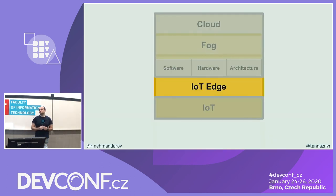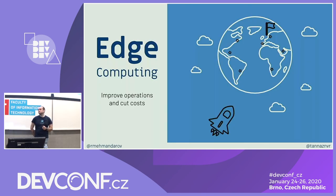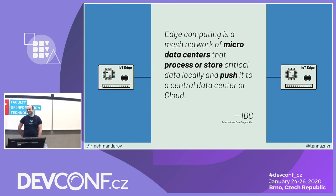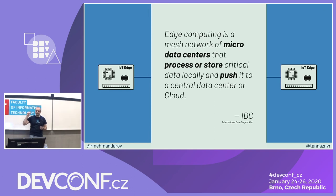The next thing in our stack is IoT Edge. Edge computing improves operations and cuts costs. As IDC says, edge computing is a mesh network of micro data centers that process or store critical data locally and push it to a central data center or cloud. So edge computing collects data produced by IoT devices and processes it locally on the device, while IoT devices send almost all data somewhere else. That means edge devices have their own compute, storage, and network in a smaller form factor. Hold on to that thought about a mesh network of micro data centers — we'll get back to it.